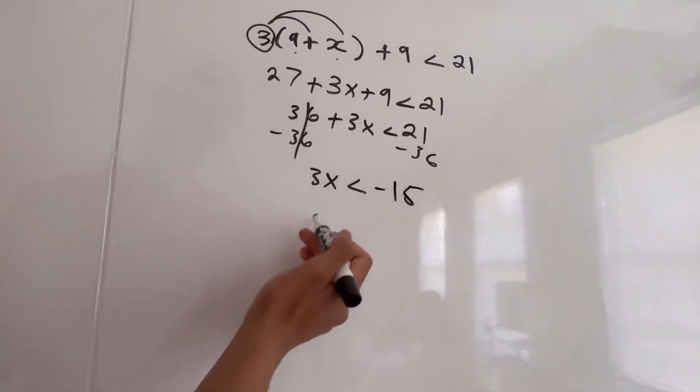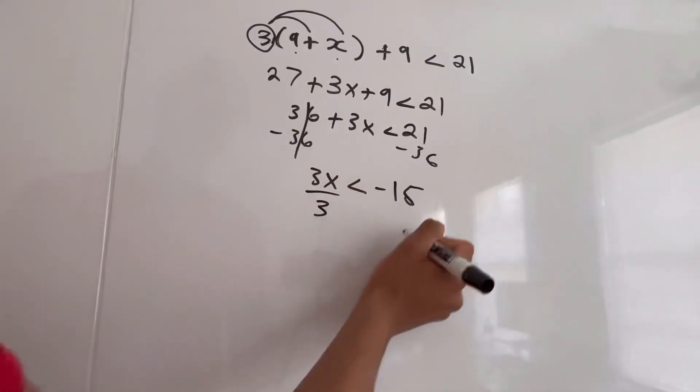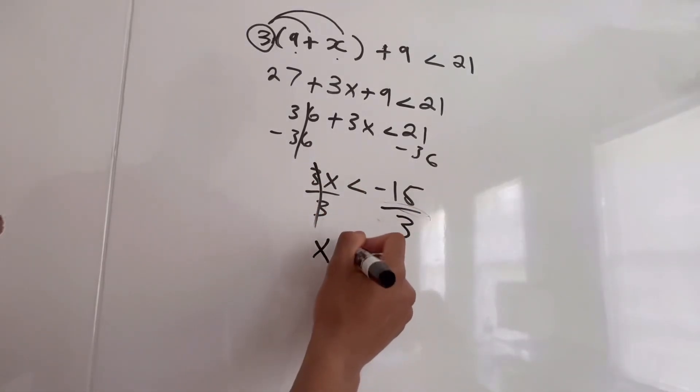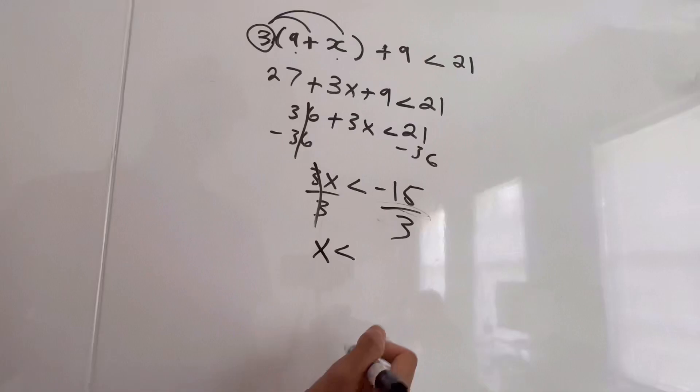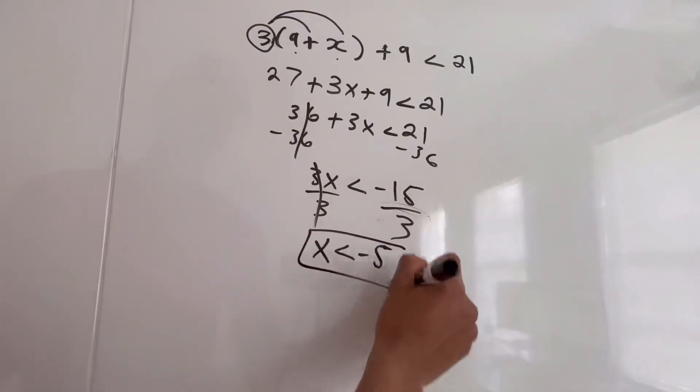And now to isolate x, we're going to have to divide 3 on both sides. So divide by 3 and negative 15 divided by 3. These two cancel out, so x is less than negative 15 divided by 3 is negative 5. So this is our answer.